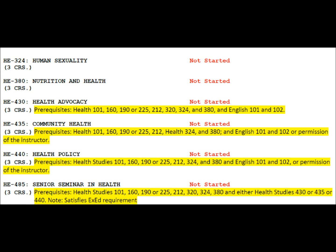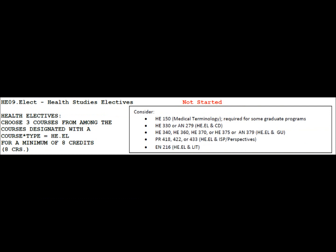This slide shows required courses and the prerequisites for each course. I suggest you find out the prerequisites required for the courses in your major. Doing this and reviewing the sequence chart will help you make sure your plan is well thought out. Health studies majors must take three courses of health electives, or HEEL course types. They can also double dip by taking an HEEL course type that is also CD, GU, ISP, and LIT course types.